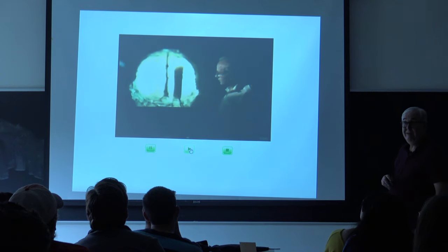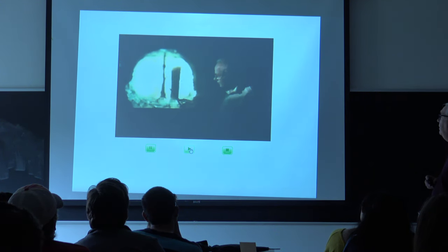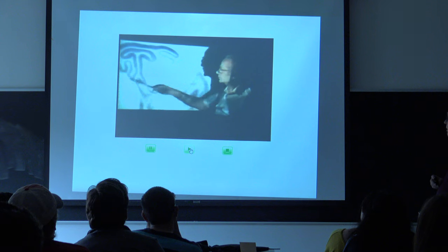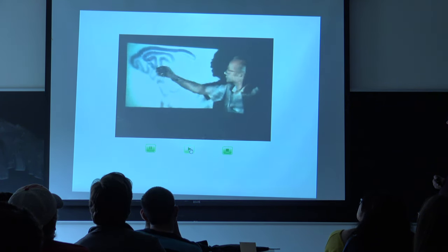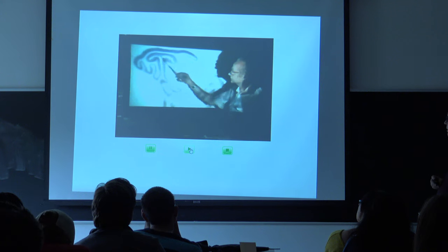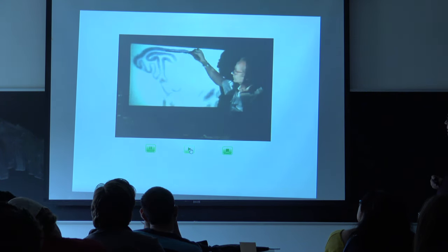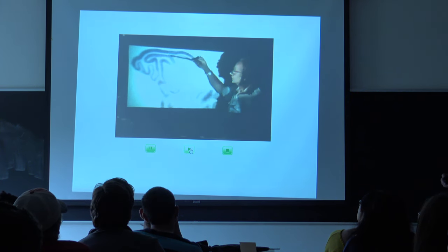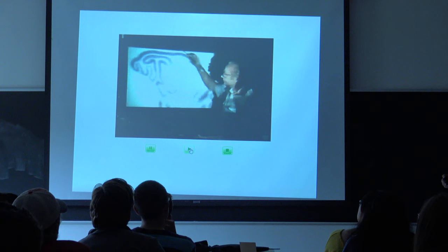This is a very young David Hubel — I'm guessing this was taken in the seventies. Here is the smooth surface of the primary visual cortex, and here you begin to see that it's a layered structure. Some places the cells are packed tightly, other places they're looser. Underneath every square millimeter of cortex, you have something like a hundred thousand cells.